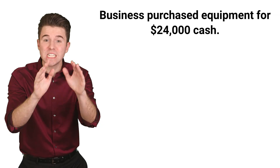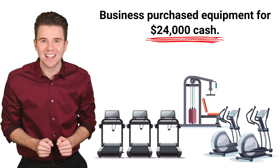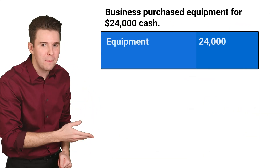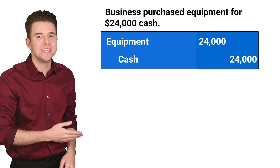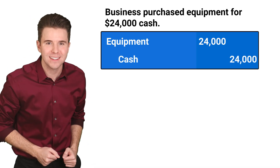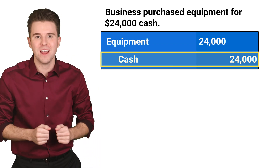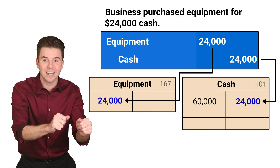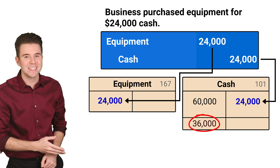Next, the business purchases fitness training equipment for $24,000 cash. We debit and increase equipment for $24,000 and credit and decrease cash for $24,000. This is essentially an exchange of one asset for another. Posting the $24,000 to the ledger accounts, we see that the credit reduces our balance in the cash account.